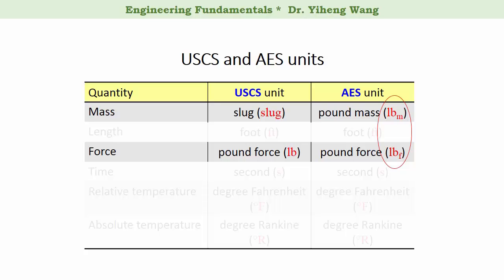In US customary unit system, on the other hand, pound is only used as the unit for force and the unit for mass is a slug. Therefore it is less confusing in the US customary unit system. I will explain these units later. Hopefully by the end of this video you will gain some clearer understanding on these units.